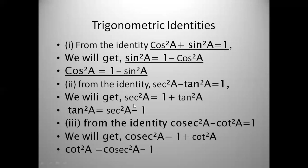So these are the three identities. Along with the three main identities, we have two more derived from each, giving a total of nine identities. These nine you must remember for solving the sums of exercise 11.4.